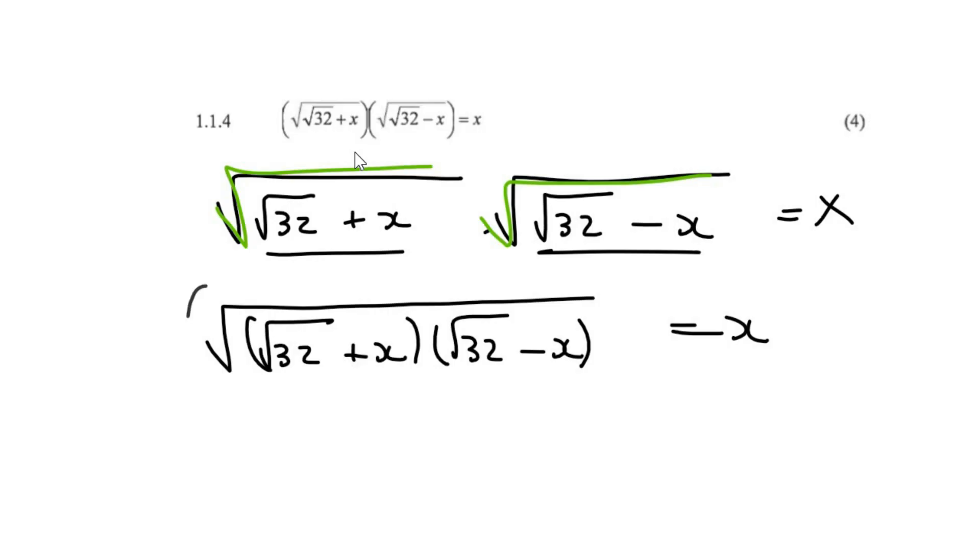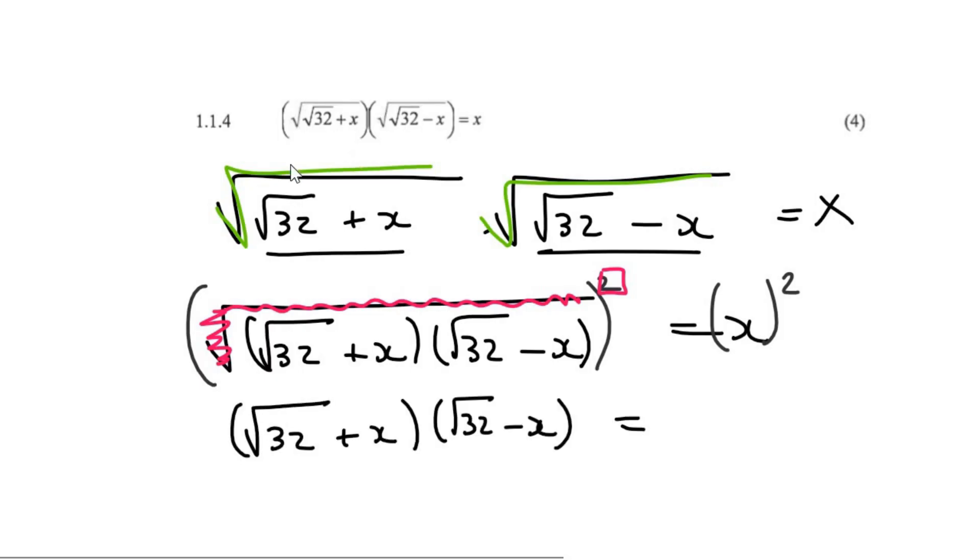So I'm going to square this side, and I'm going to square this side. Now what this two does over here is it completely erases the square root, but everything else stays the same. And so what we have now is the square root of 32 plus x, and that's all going to be equal to x squared.